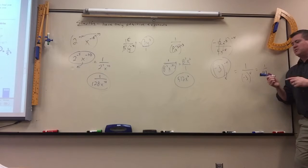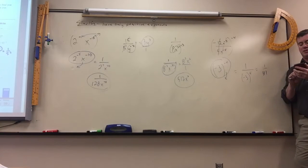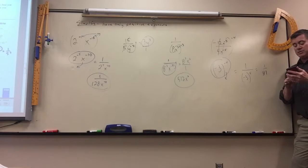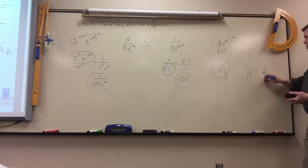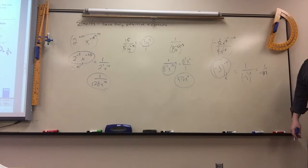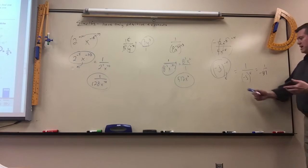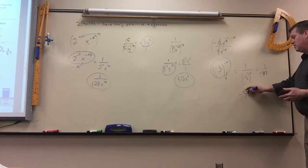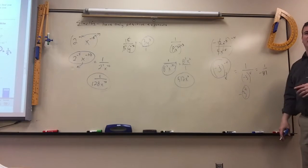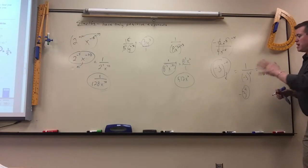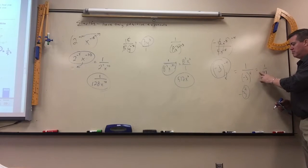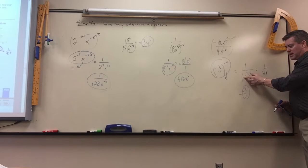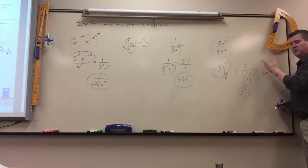You've got to be careful. Some calculators, if you punch in negative 3 raised to the 4th without parentheses, will give you negative 81, because it just does the exponent and leaves the negative there. That's why it's better to look at it and know whether it's going to be positive or negative. There's an even amount of negatives included, so they cancel and the result is positive.